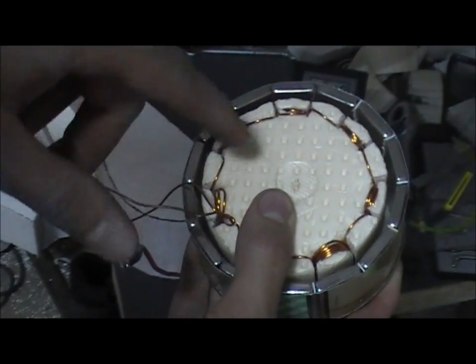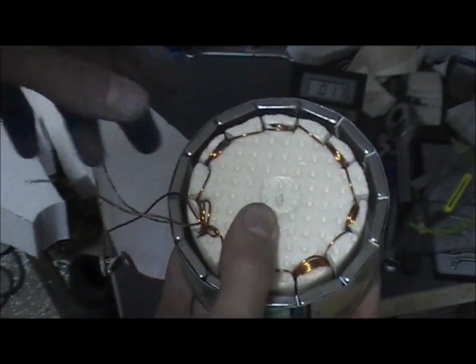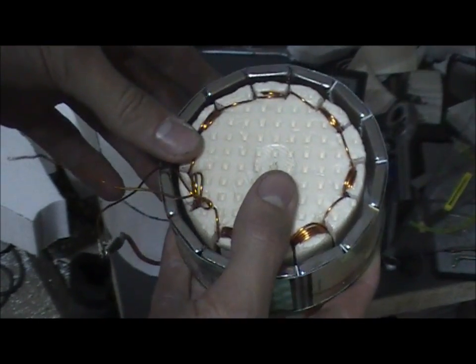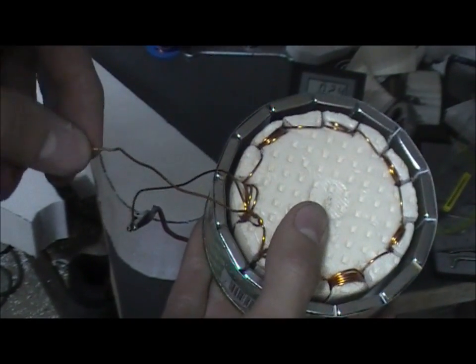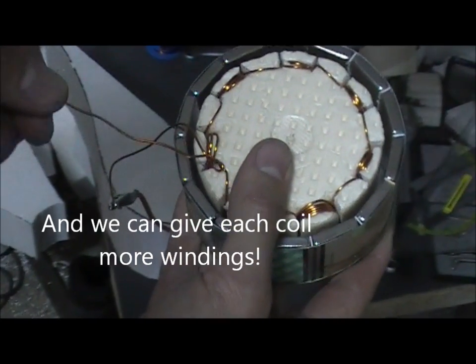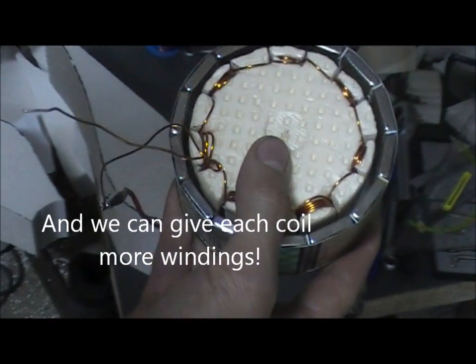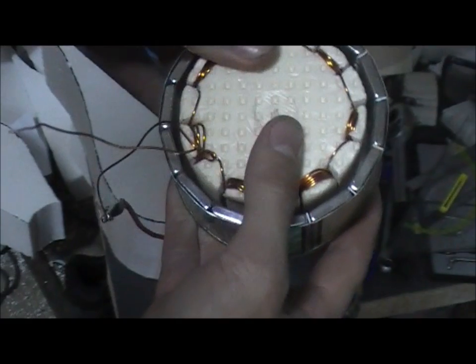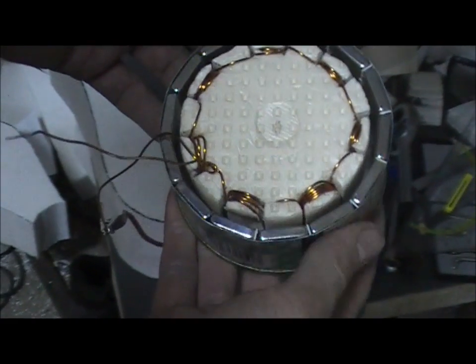Then we can of course try to run it faster, spin it faster, or we can change the thickness of the wire. But proof of concept is given, it works. Not as well as I was hoping for, but it works, okay? So I will have to think how I can improve this.